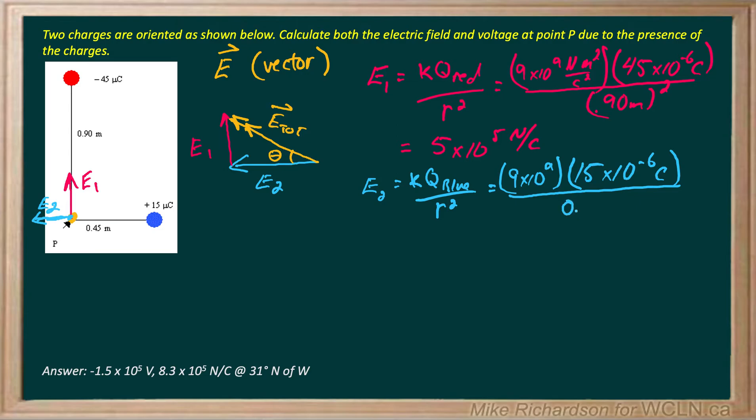R is 0.45 meters and I've got to square it. And when I do that one I end up getting 6.67 times 10 to the fifth newtons per coulomb.